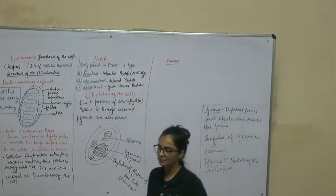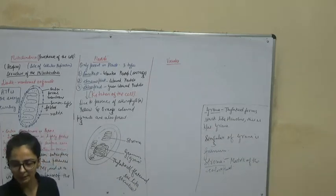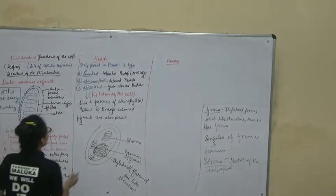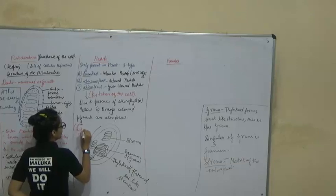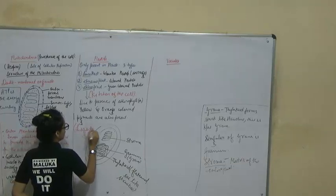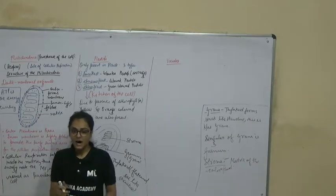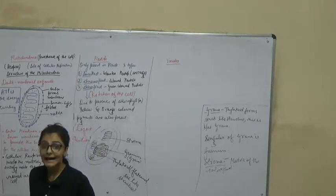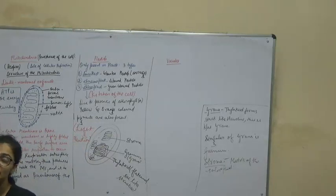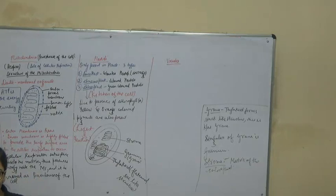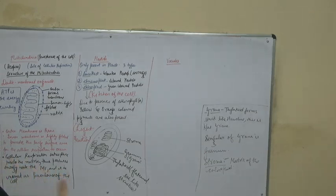You will also read about light reactions in NCERT. Grana are the site for the light reaction. Light reaction refers to the photosynthetic reaction occurring in the presence of light, where inorganic substances are converted into organic substances — which is why the chloroplast is called the kitchen of the cell.